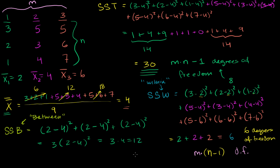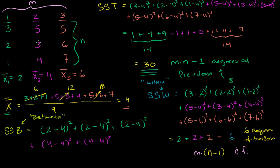Let me write it all out for all groups combined, since I want to find the total sum of squares due to differences between the samples. From the first sample, that contribution is already calculated. For the second sample, each data point contributes (4 minus 4) squared, three times over. For the third group, the sample mean is 6, so each data point contributes (6 minus 4) squared, giving three terms of (6 minus 4) squared, plus (6 minus 4) squared.